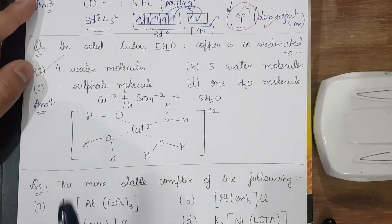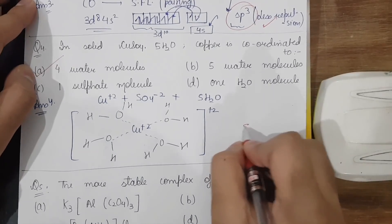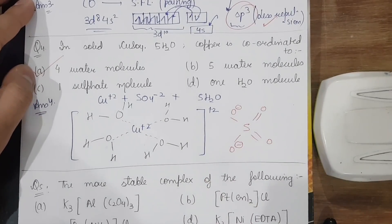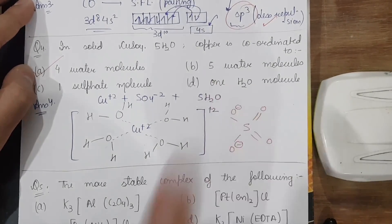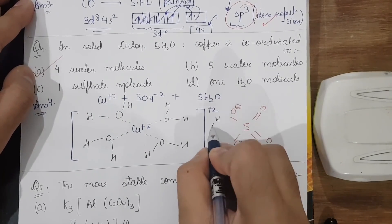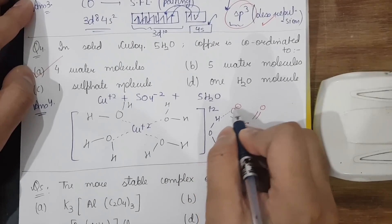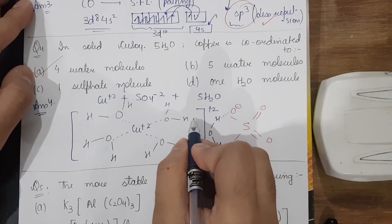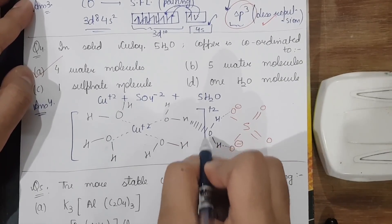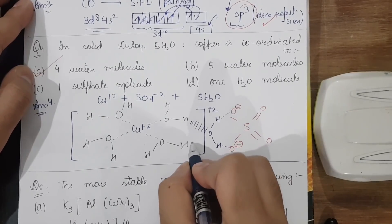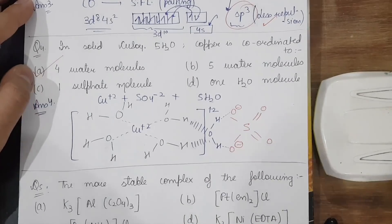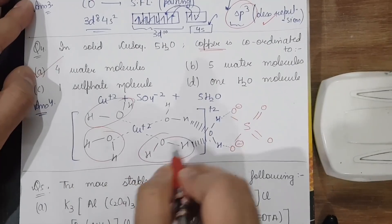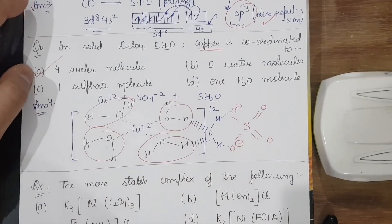The +2 charge on copper is balanced. SO₄²⁻ is also present. The fifth water molecule is not directly coordinated to copper — instead it forms hydrogen bonds with the SO₄²⁻ and the coordinated water molecules. So the answer is that four water molecules are coordinated to copper.